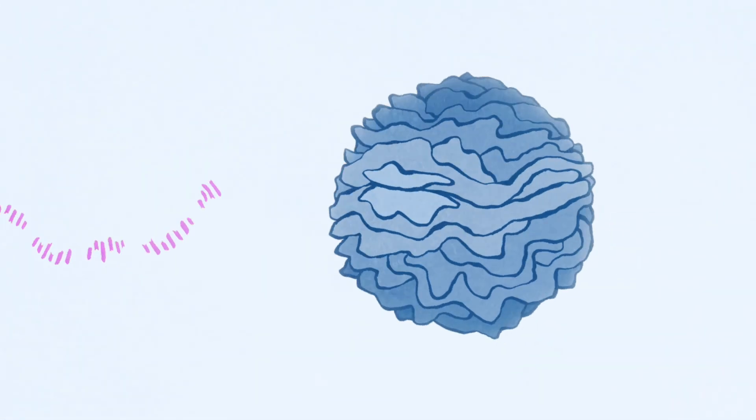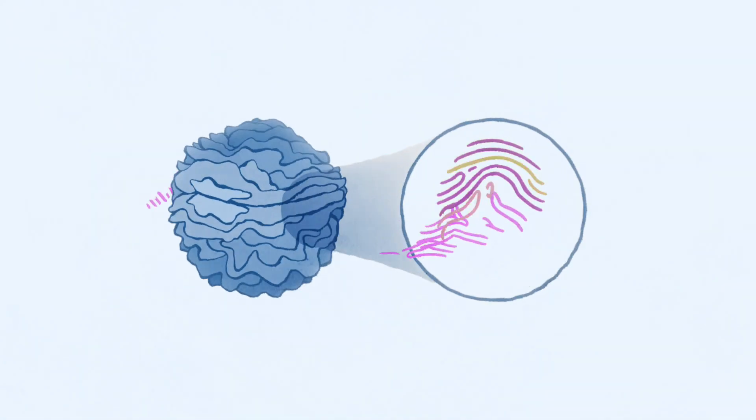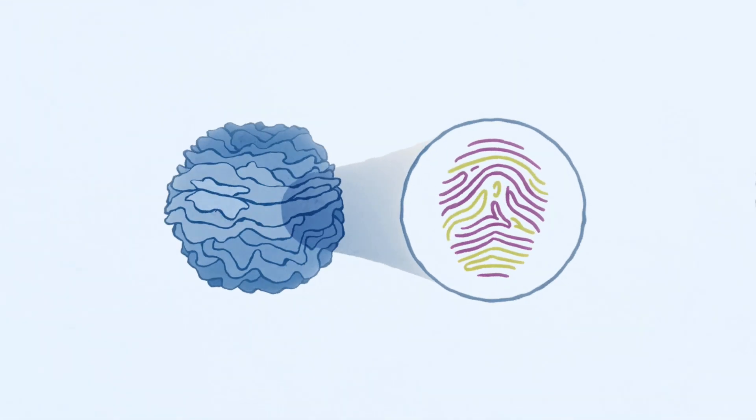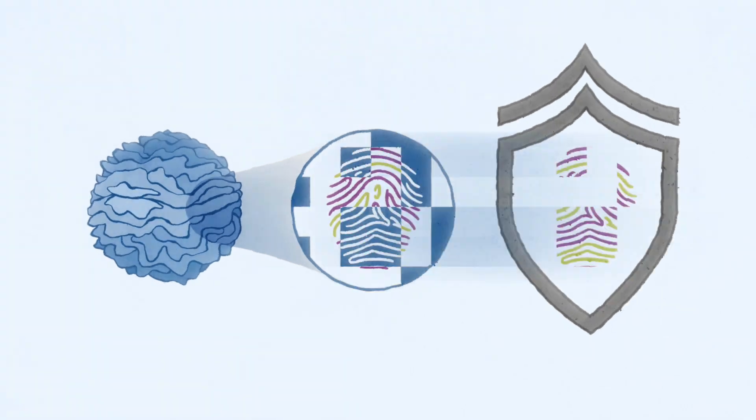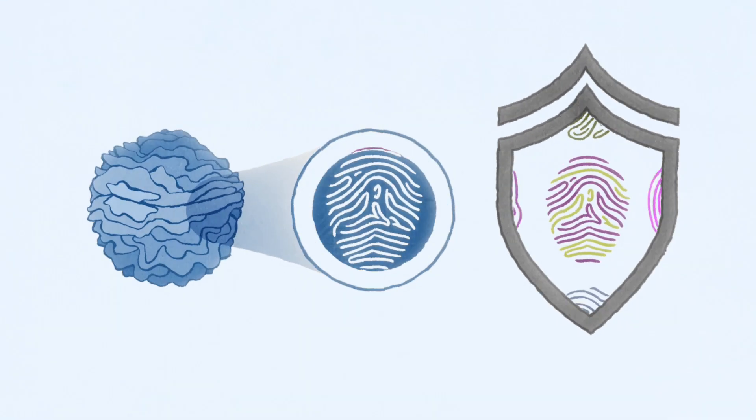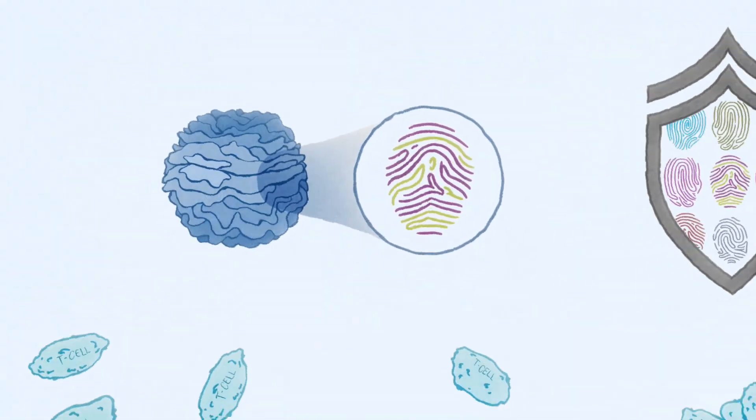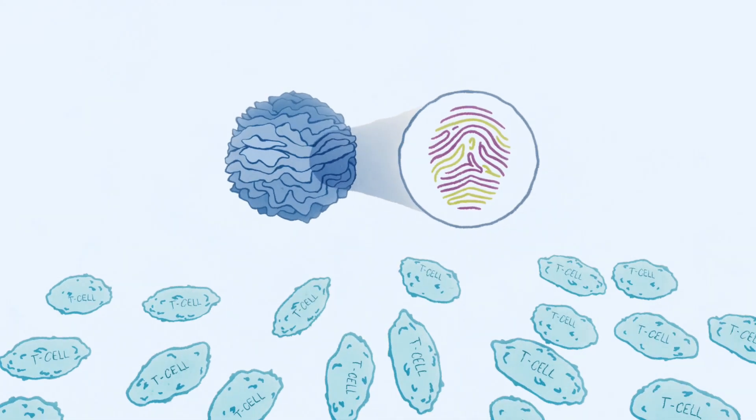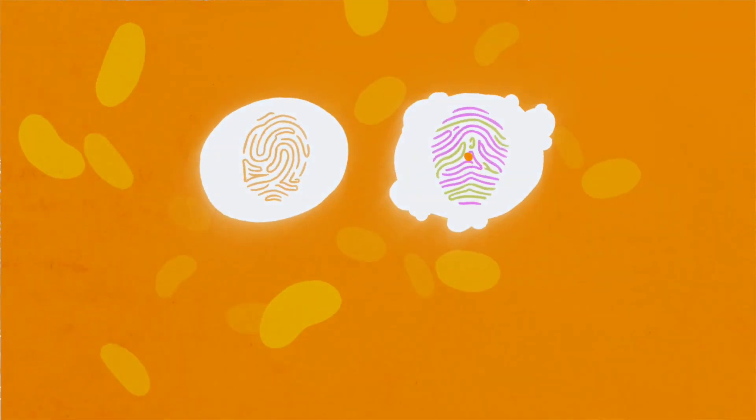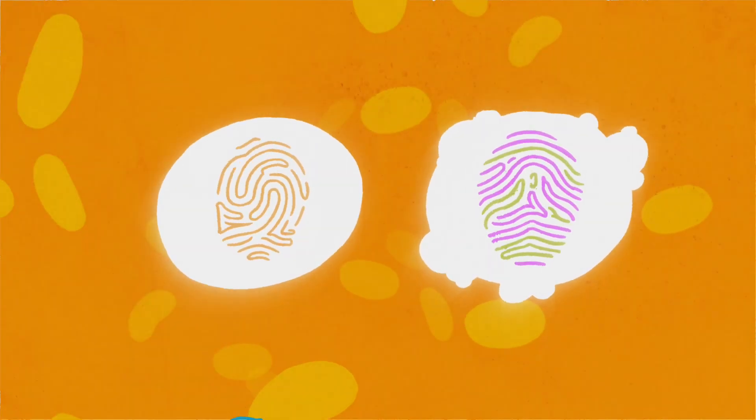Within the body, specialized immune cells called dendritic cells decode the mRNA back into the neoantigen proteins. The dendritic cells now have the hidden fingerprint of a person's cancer in their database. They then train the rest of the immune system, including T cells, to recognize and attack the cancer cells that express the same neoantigens.